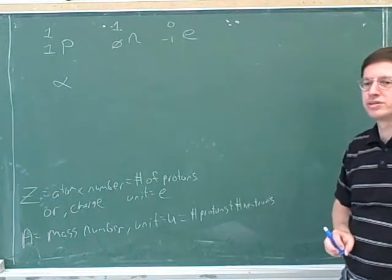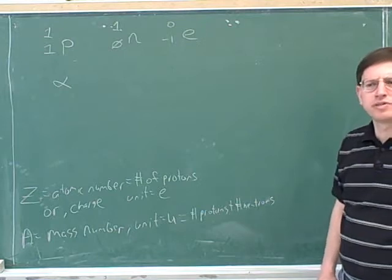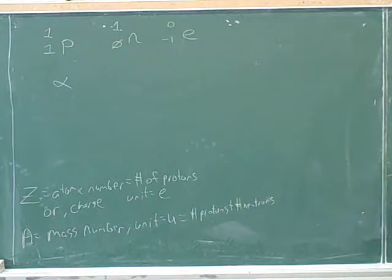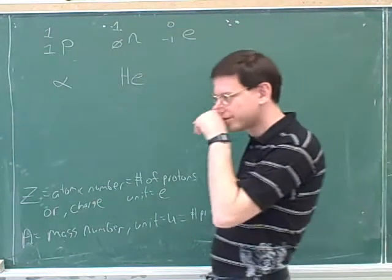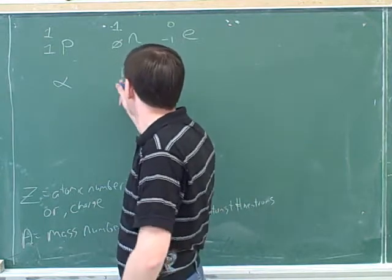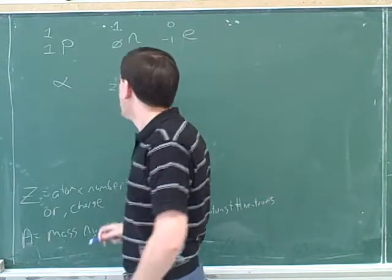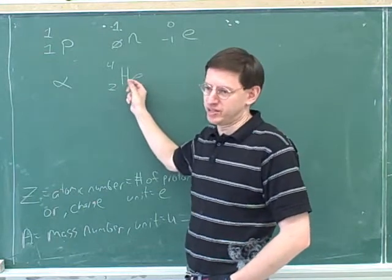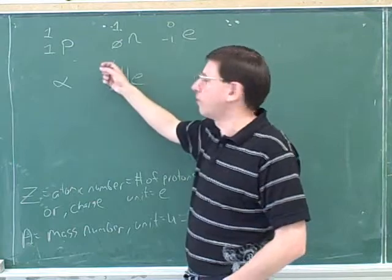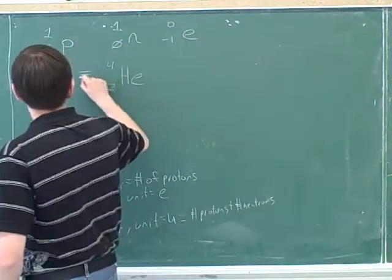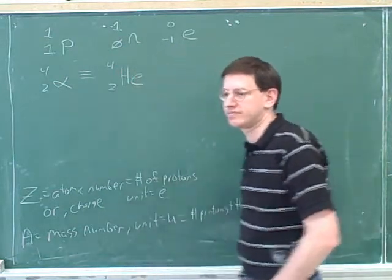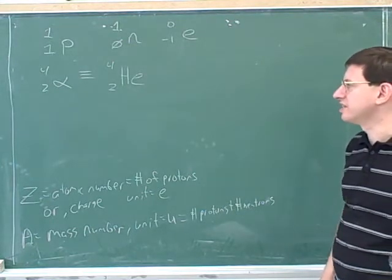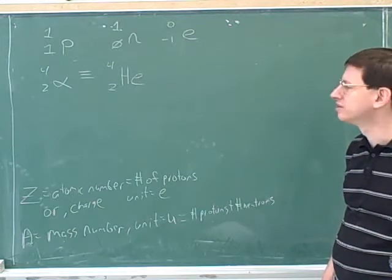A particle that's important in many problems is the alpha particle. We need to memorize what an alpha particle is. An alpha particle turns out to be a helium nucleus. The atomic number for helium is 2, and the mass number is 4. We should memorize these numbers for a helium nucleus — especially that 4 is the mass number. Those are also the numbers for the alpha particle, because an alpha particle just is a helium nucleus. These are just two ways of writing the same thing.